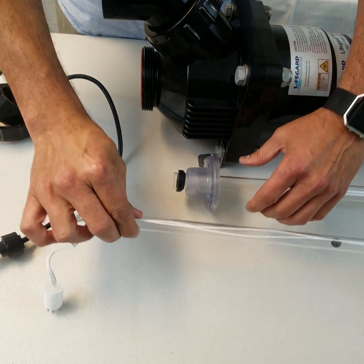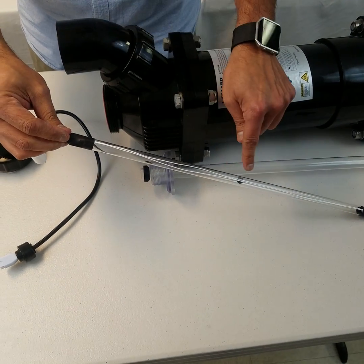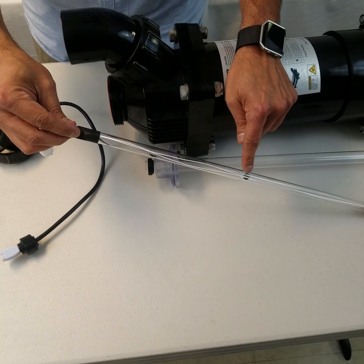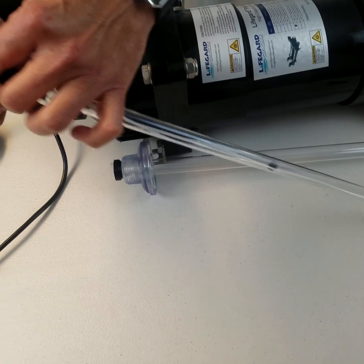Then once this is done, you take the bulb, the UV quartz bulb. The little red dot, the mercury dot, shows that it's an amalgam bulb. So this is a 55 watt UV that we are installing.